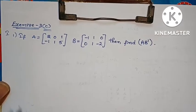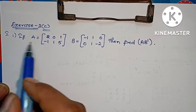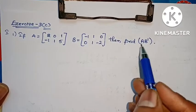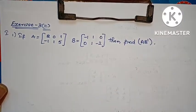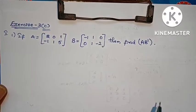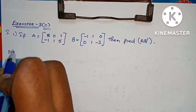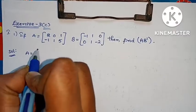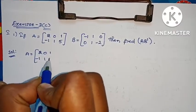This is the first problem. The question: if A equals this matrix and B equals this matrix, find AB and (AB) transpose. Solution: A into B transpose — first row, second row, second column.